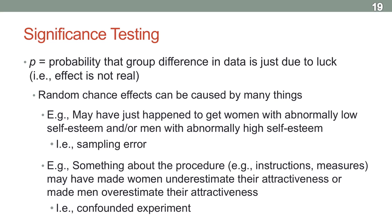For instance, when we ask people how attractive they think they are, women might underestimate their attractiveness because they're trying to appear humble — saying 'I'm not that attractive' when inside they know they are. Whereas men might not feel that pressure to appear humble, and so are more honest in their self-attractiveness ratings. Whatever the case — whether it's sampling error, confounds, or anything else — we want to rule out that this could be the cause of our effects.